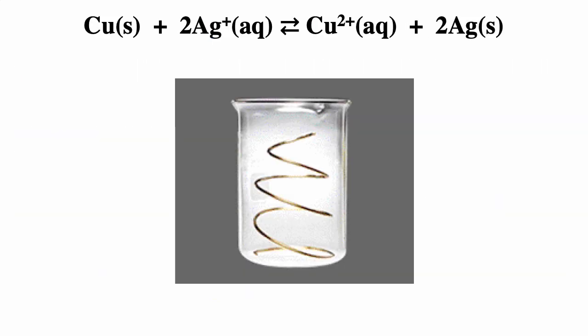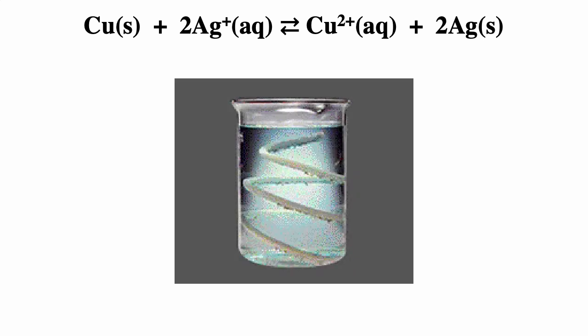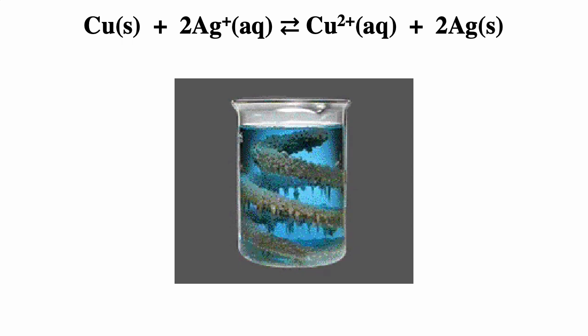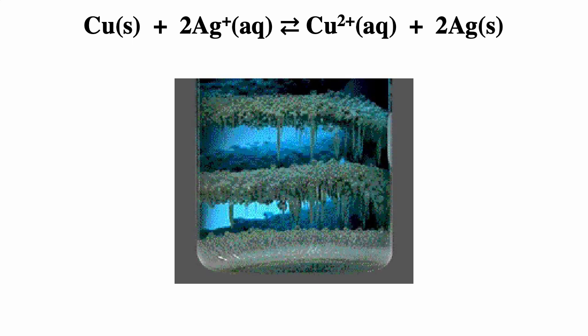Here's a nice example of an electrochemical reaction. Copper metal reacts spontaneously with a solution of silver nitrate. A coating of silver metal forms on the copper, while copper two plus ions — which are blue in water — are released into the solution. If you put a hunk of copper into a solution with silver ions, some of the copper metal will be converted to copper ions, and some of the silver ions will be converted into silver metal.